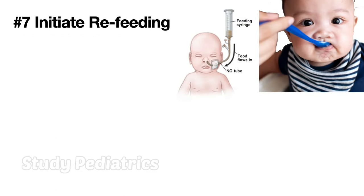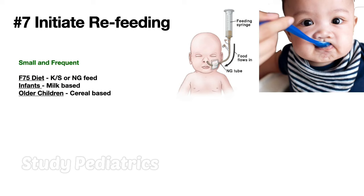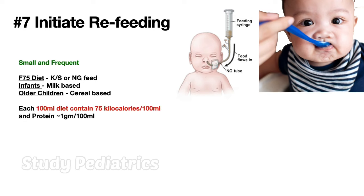The most important thing in SAM management is to initiate refeeding. It is begun as small and frequent feeds. We prefer F75 diet — meaning 75 kilocalories per 100 ml of diet. It is given by katori-spoon or NG feed. Oral route is the most important — IV is not preferred in SAM patients. Infants receive milk-based diet; older children receive cereal-based diet. Each 100 ml contains 75 kilocalories and 1 gram of protein.